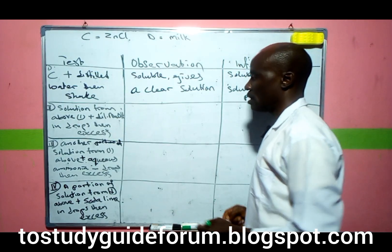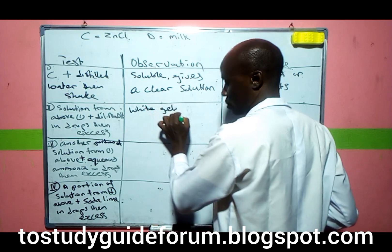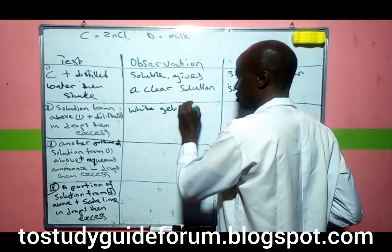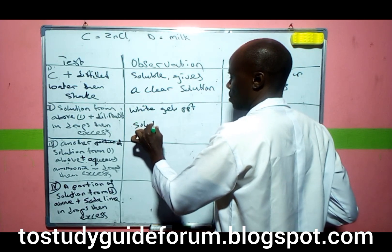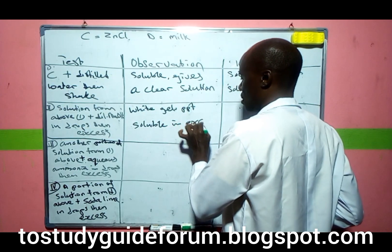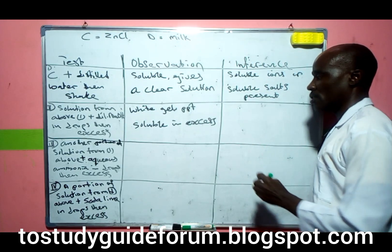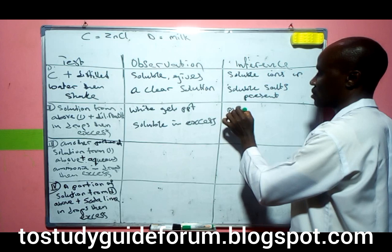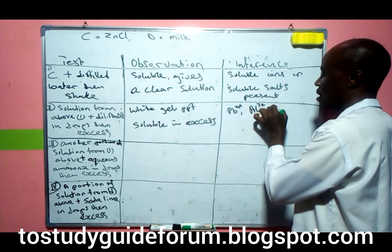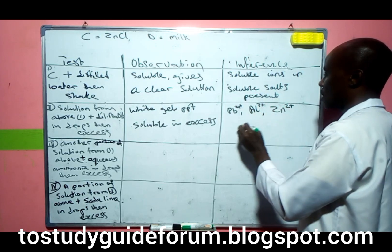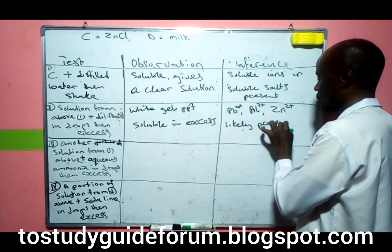To another portion of the solution, we add dilute sodium hydroxide in drops. We notice a white gelatinous precipitate which is soluble in excess. In the inference, since we don't really know the exact salt, we know that a white precipitate soluble in excess can be given by the lead ion, aluminium ion, and zinc ion, meaning they are likely present.